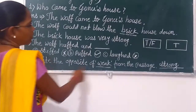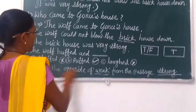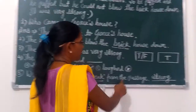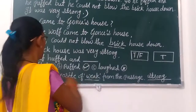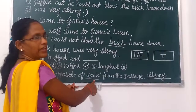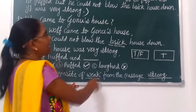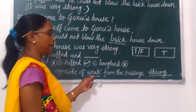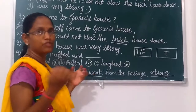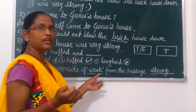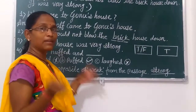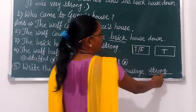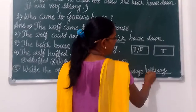Number five: Write the opposite of weak. Find the opposite word of weak from the passage. The opposite word is strong. You write strong here.